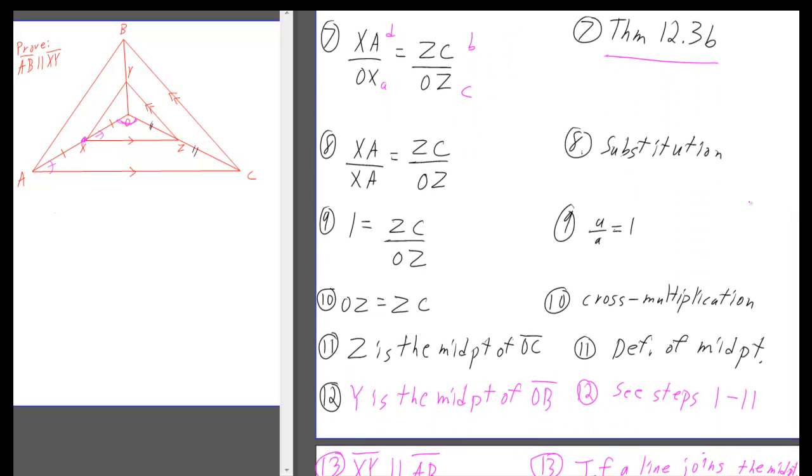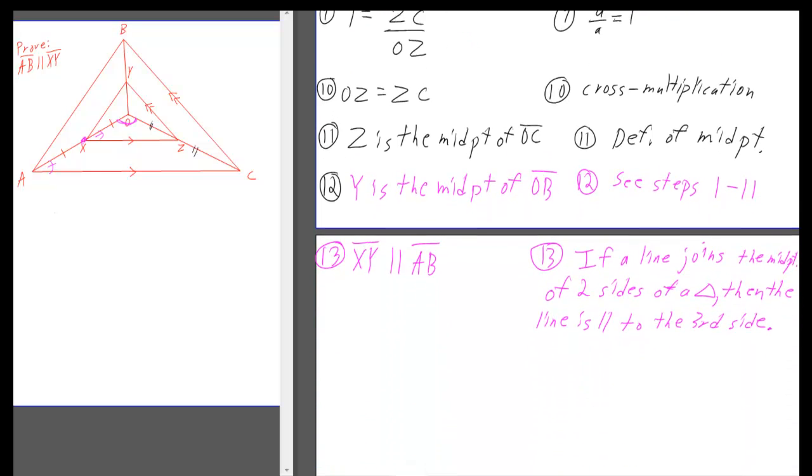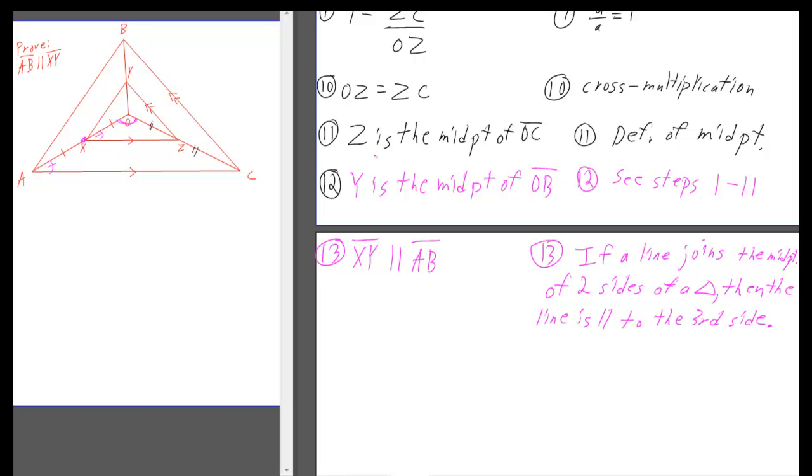All right, once you have all that, you can just change OX to XA by substitution. And then XA over XA, well, whenever you have A over A, it's equal to 1. So then you get 1 is equal to ZC over OZ. And then you could write OZ is equal to ZC. That's cross-multiplication technically. You could come up with other stuff too, though. And then Z is the midpoint of OC, that's just by definition, because if OZ is equal to ZC, well, then that must mean Z is the midpoint.